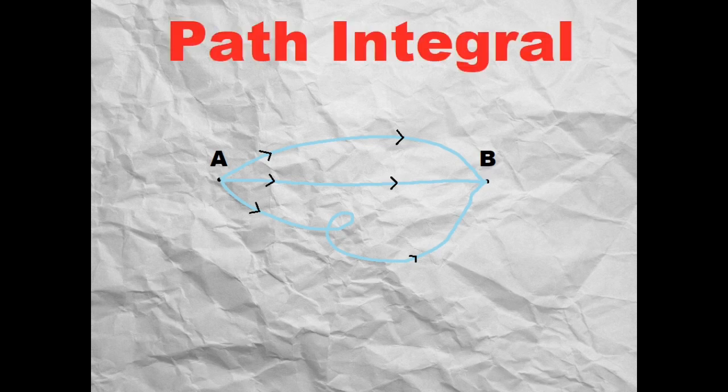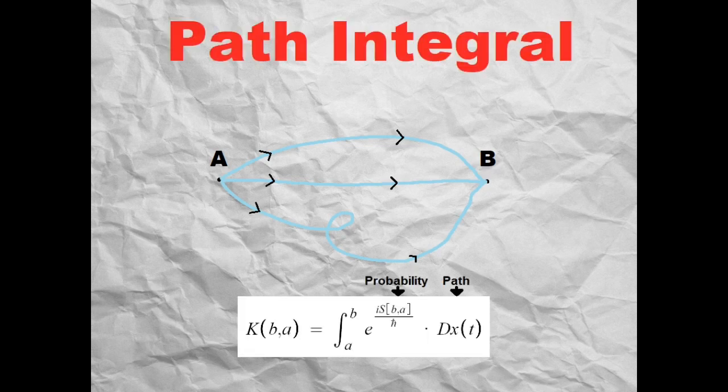To sum up these paths, we use a path integral. In this general equation, we have an infinite sum of each path times each probability.